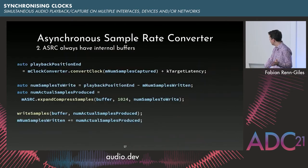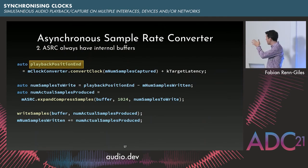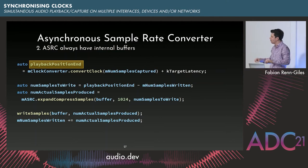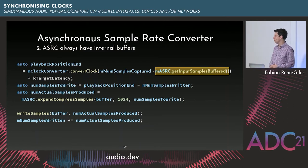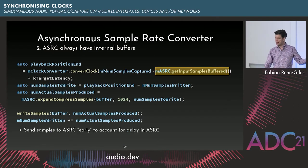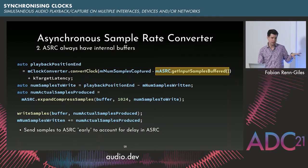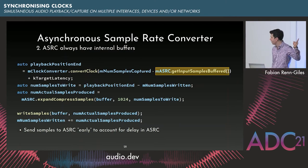We need to account for that ASRC internal buffering — we cannot ignore it. We're calculating the point in time where playback of the current buffer should end, but that's not accurate anymore because we have a conceptual delay line in front of our ASRC. So we must ask the ASRC how many input samples it actually has buffered, and take that into account when calculating playback_position_end. Notice it's inside the argument of the convert_clock function — correct, because the input side of the ASRC is connected to the capture device, so this is done in the capture device's clock domain.